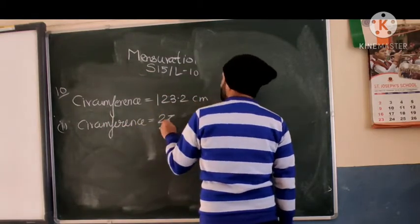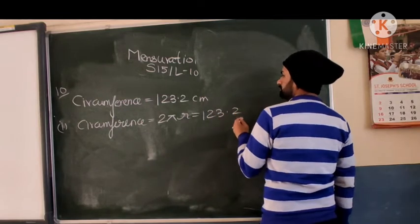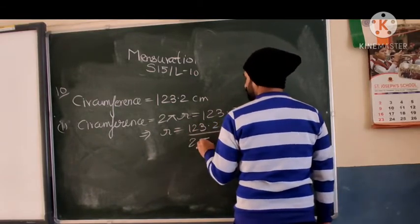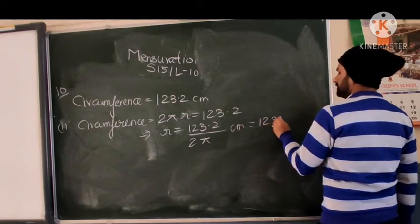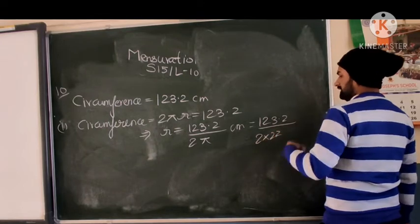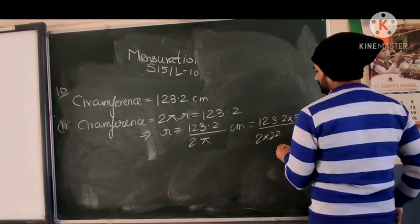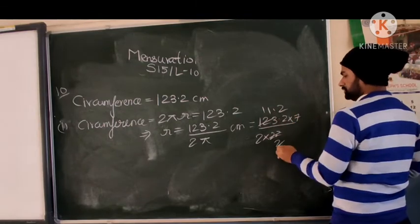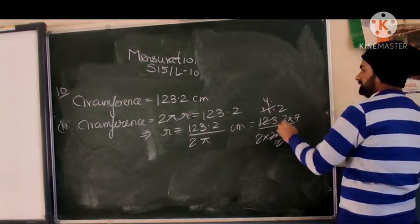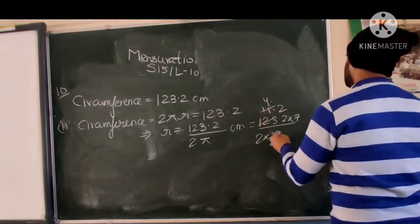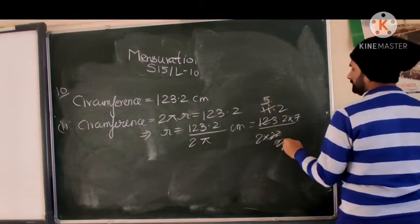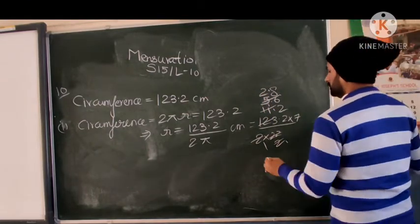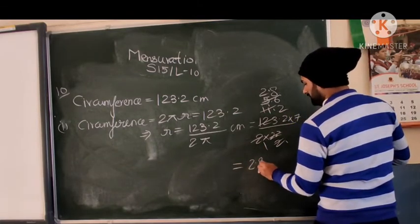First part: circumference is equal to 2πr equals 143.2. This implies that r equals 143.2 upon 2π centimeters. That is 143.2 upon 2 times 22/7. Simplifying, it will be 22.8 times 7 cm.